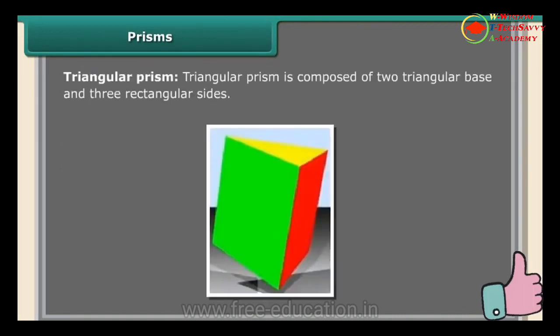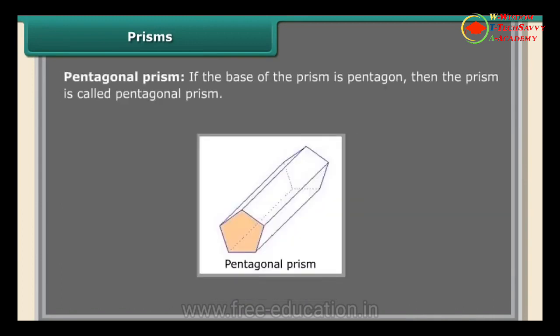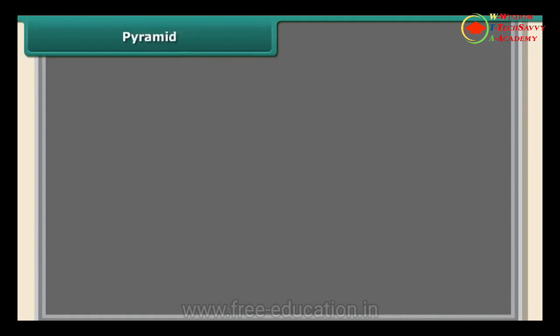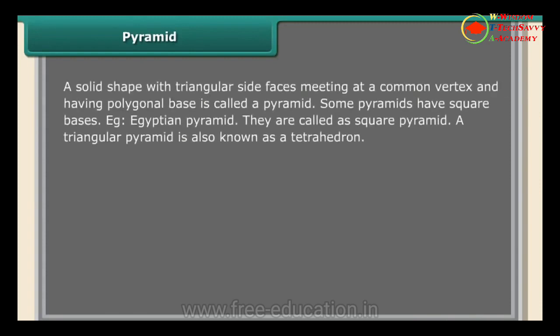A triangular prism is composed of two triangular bases and three rectangular sides. A pentagonal prism has a pentagon as its base. A prism is called a right prism if its lateral edges are perpendicular to the bases; if they are not perpendicular, it is called an oblique prism.